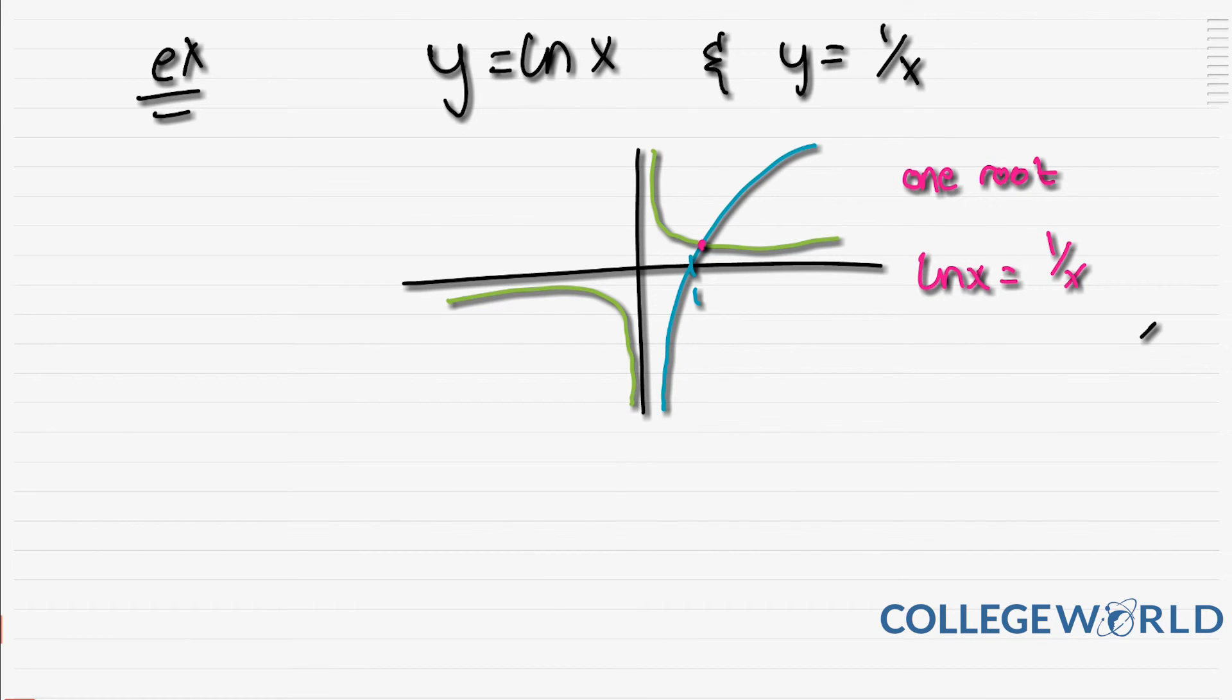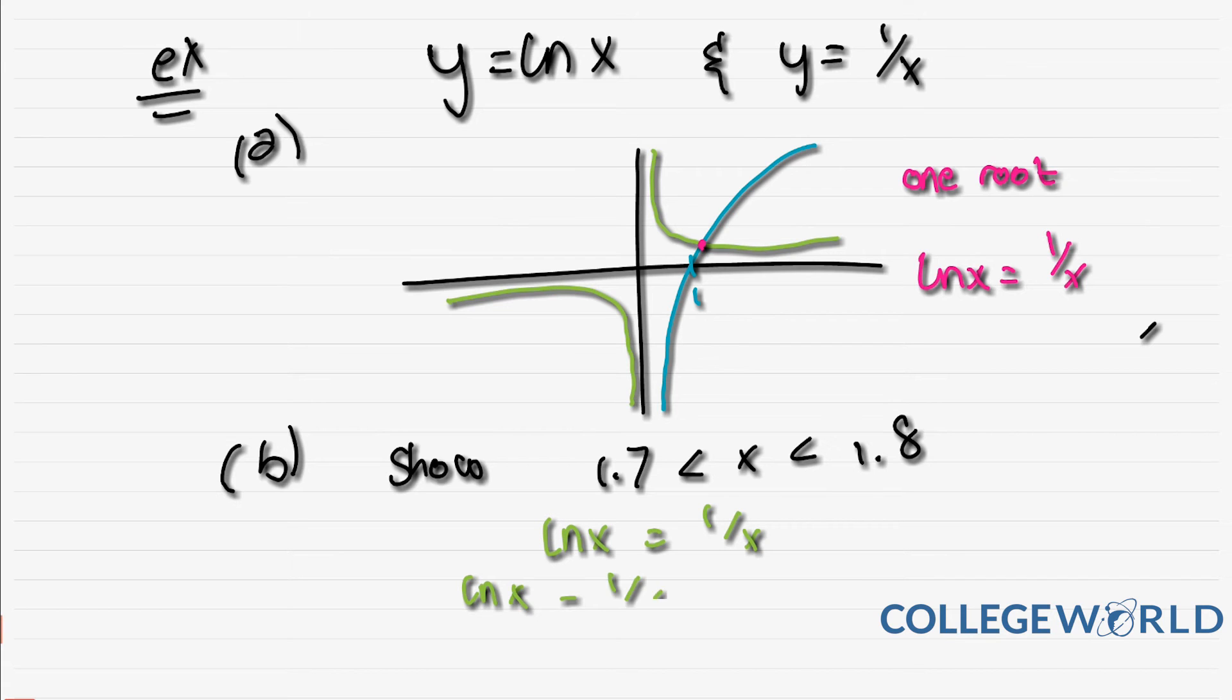The second part, they tell you: show that there is a root in the interval 1.7 and 1.8. What you're going to do is say ln x = 1/x. You want to say ln x - 1/x = 0, and this is your new function. Then you're going to replace it where you say f(1.7) equals something, and f(1.8) equals another something, and state that there is a change in sign.